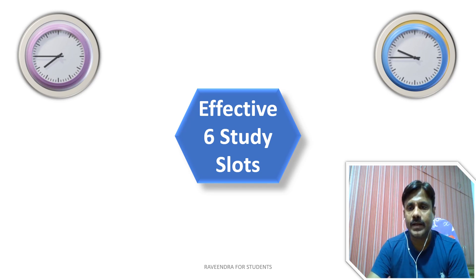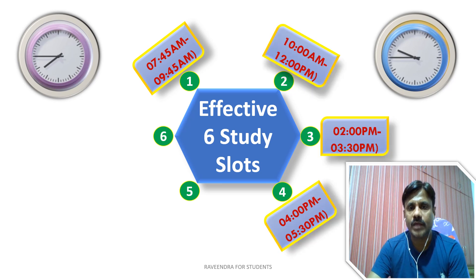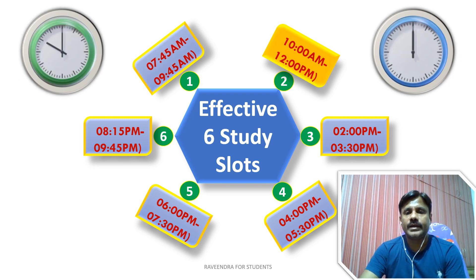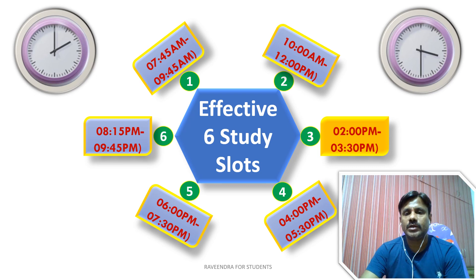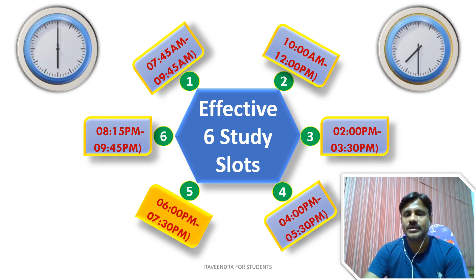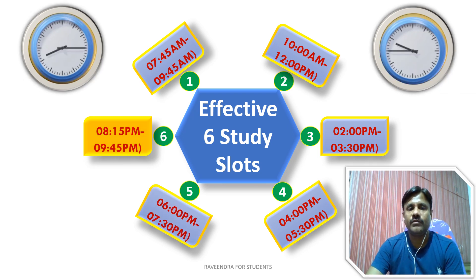At a glance, all 6 study slots are: the first two are 2-hour sessions — 7:45–9:45 a.m. and 10 a.m.–12 p.m. — and four are one-and-a-half-hour sessions: 2–3:30 p.m. (difficult slot with physical activity subjects to avoid sleep), 4–5:30 p.m., 6–7:30 p.m., and 8:15–9:45 p.m. Before going to sleep at 10 p.m., plan your tasks for tomorrow.